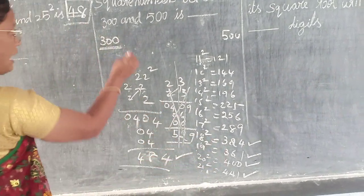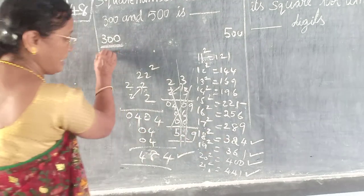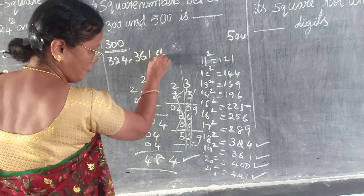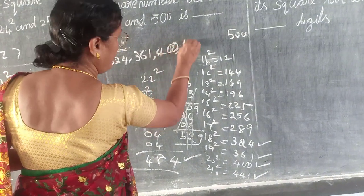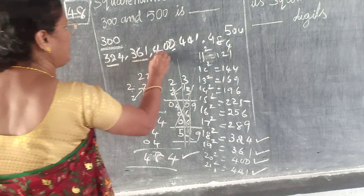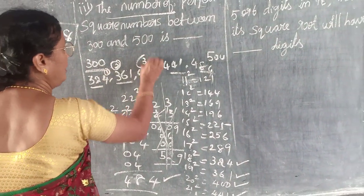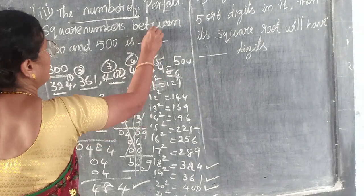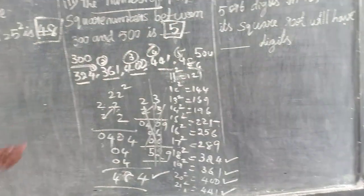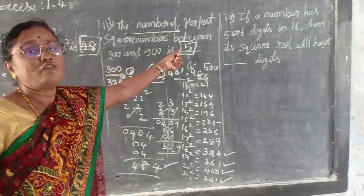So how many numbers are there? What are the numbers? 324, 361, 400, 441, 484. How many numbers? 1, 2, 3, 4, 5. The number of perfect square numbers between 300 and 500 is 5.